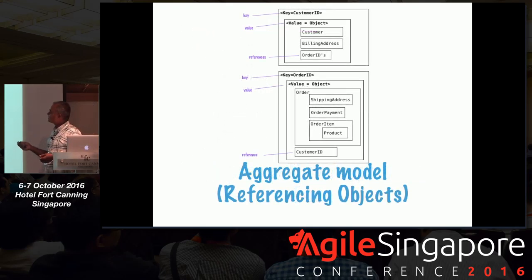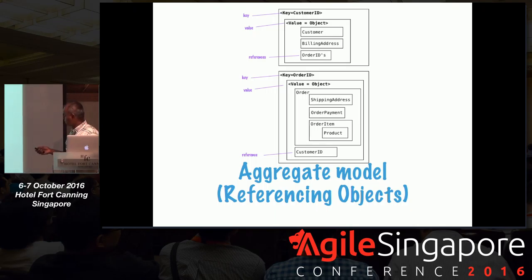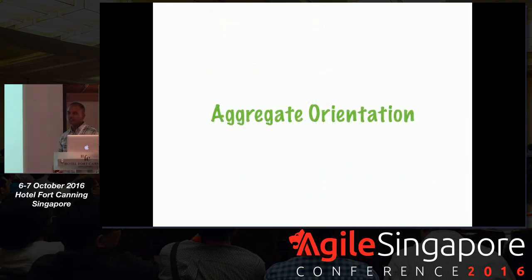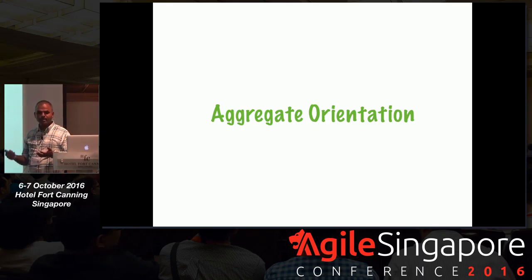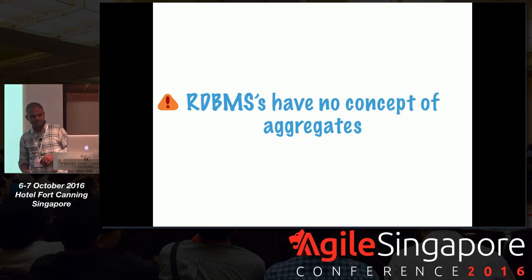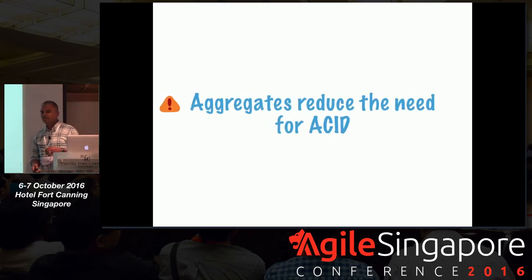You're representing this aggregate as data. You could also do a split aggregate — if a customer has a thousand orders, you can split around the customer object and reference orders as an array of order IDs. Once you go to aggregate-oriented design, it frees you from certain constraints. Relational databases don't have this concept of aggregates — you could do a materialized view, but they're still rows. Having an aggregate also reduces the need for ACID compliance.